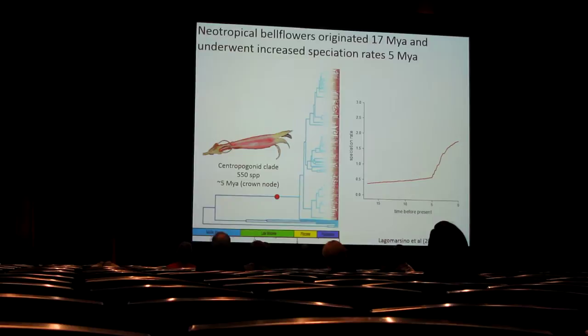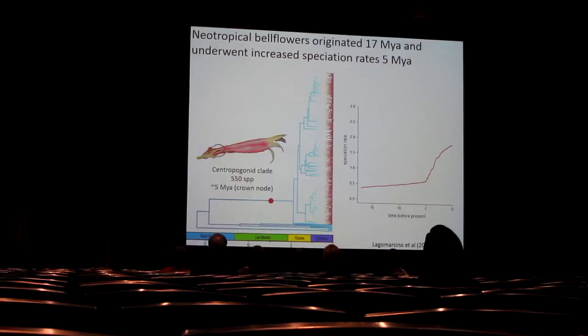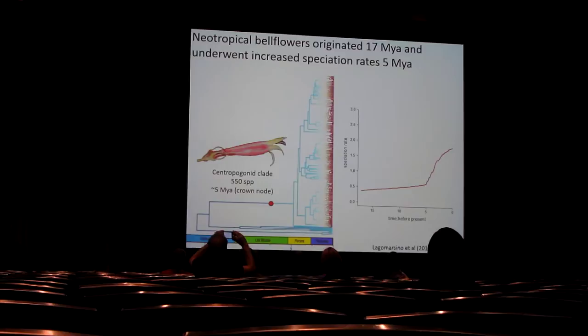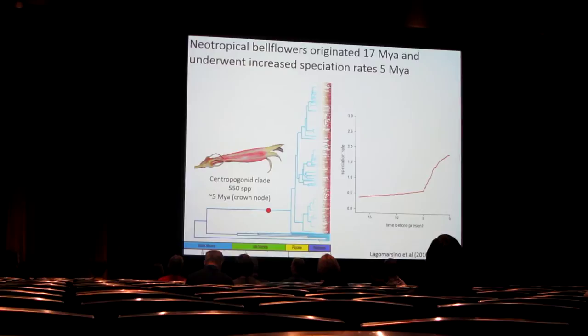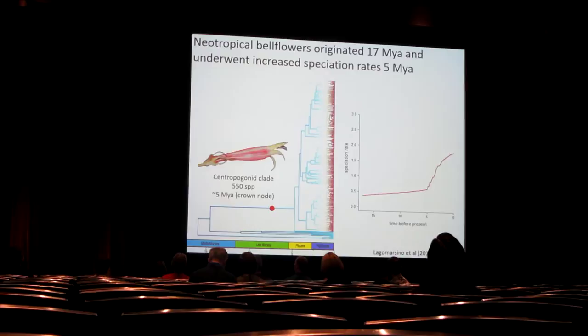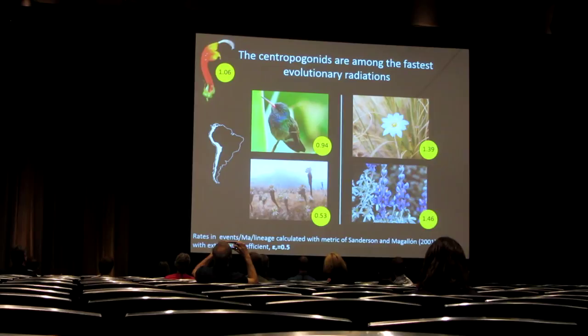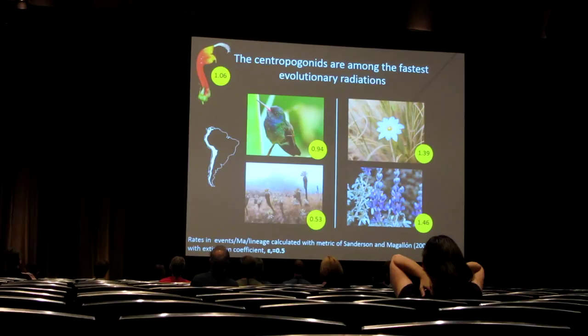What did we find? We find first that the neotropical bellflowers originated about 17 million years ago in the mid-Miocene. From that point to about five million years ago, we see a fairly flat and slow diversification rate. But around five million years ago, we infer a shift to increased net diversification rate, which coincides with the origination of the Centropogon subclade of neotropical bellflowers — an incredibly species-rich group. As you can see in the graph to the right, the diversification has been quite impressive, and not surprisingly the Centropogon clades are among the fastest evolutionary radiations.